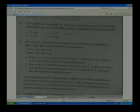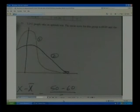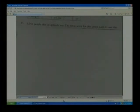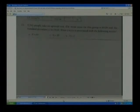For example, 5342 people take an aptitude test. The mean score for the group is 69.04, standard deviation is 19. Find the z-score associated with the following scores. They're giving you some extra information here - you don't have to know how many people are in the group to calculate this.